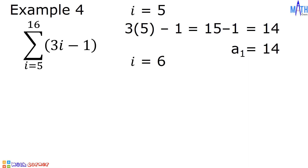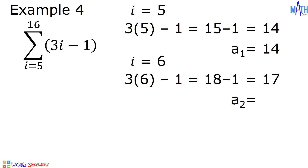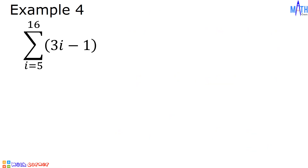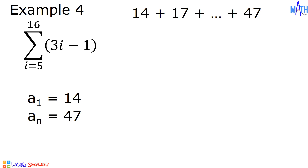If i equals 6, then 3 times 6 minus 1 equals 18 minus 1 equals 17. That is the second term of the series. To find the last term, let i equal 16: 3 times 16 minus 1 equals 48 minus 1 equals 47. So 47 is the last term of the series. We have the series 14 plus 17, all the way up to 47. The first term is 14, A sub n is 47. Since i goes from 5 to 16, there are a total of 12 terms, so n equals 12.